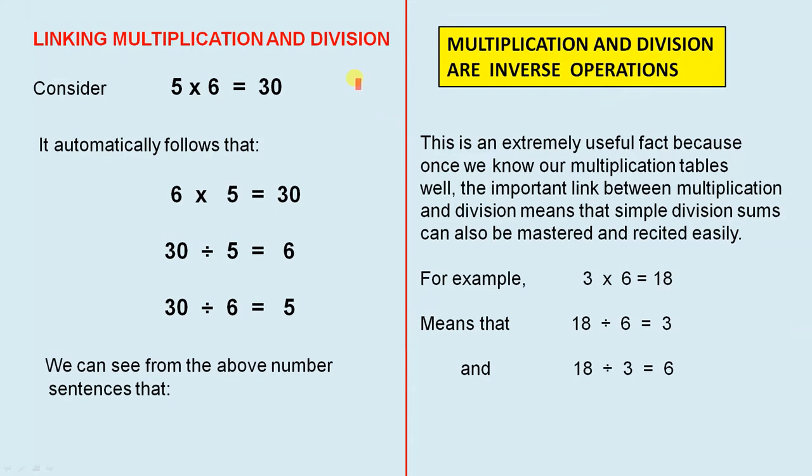Linking multiplication and division. Consider 5 times 6 equals 30. It automatically follows that 6 times 5 equals 30. We've already seen that you can swap those around and still get the same answers. Now from there, it naturally follows that 30 divided by 5 equals 6. That is 5 divides into 30 6 times. And it also follows that 30 divided by 6 equals 5.